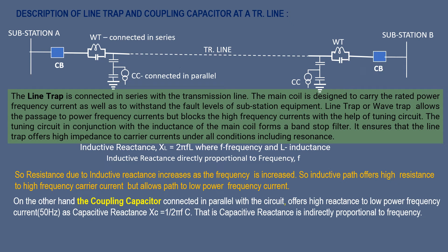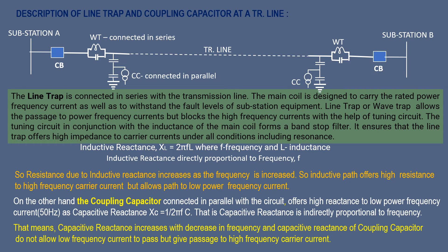On the other hand, the coupling capacitor connected in parallel with the circuit offers high reactance to low power frequency current (50 Hz), as capacitive reactance XC = 1/(2πfC), meaning capacitive reactance is inversely proportional to frequency. That means capacitive reactance increases with decrease in frequency. Therefore, the coupling capacitor does not allow low frequency current to pass but gives passage to high frequency carrier current. Separation between the two currents is achieved through this process.